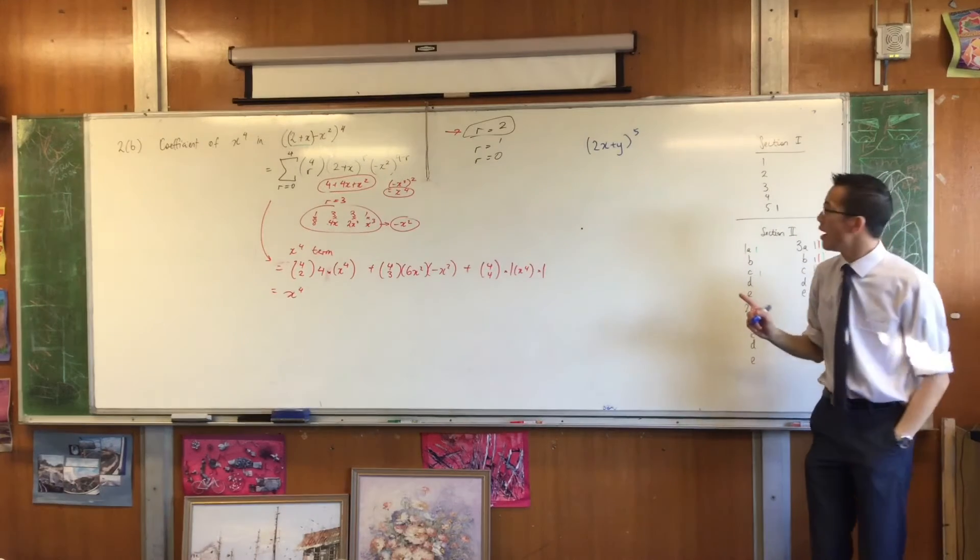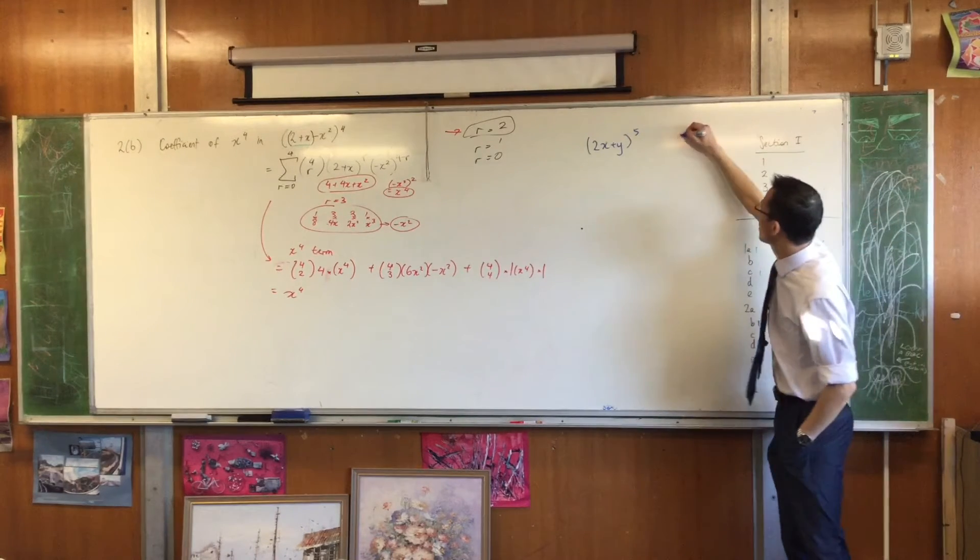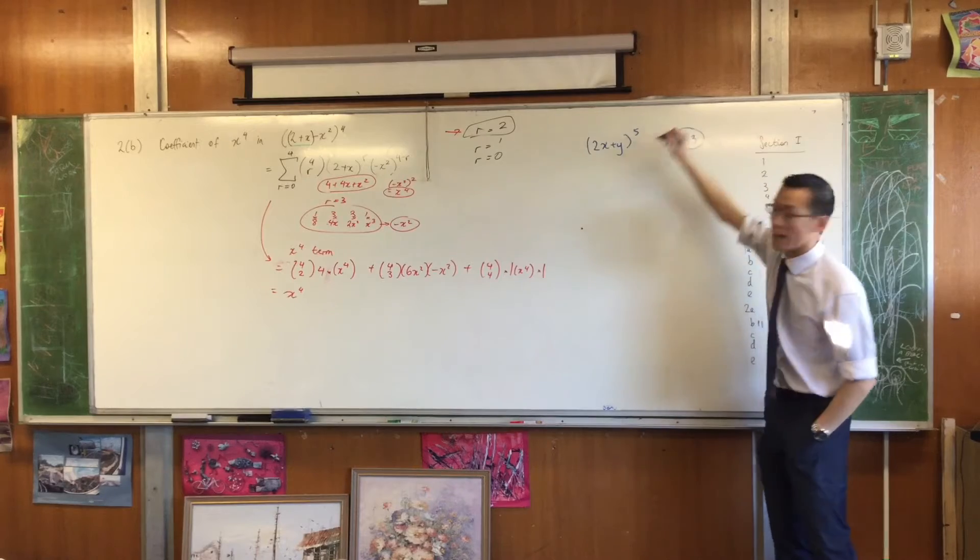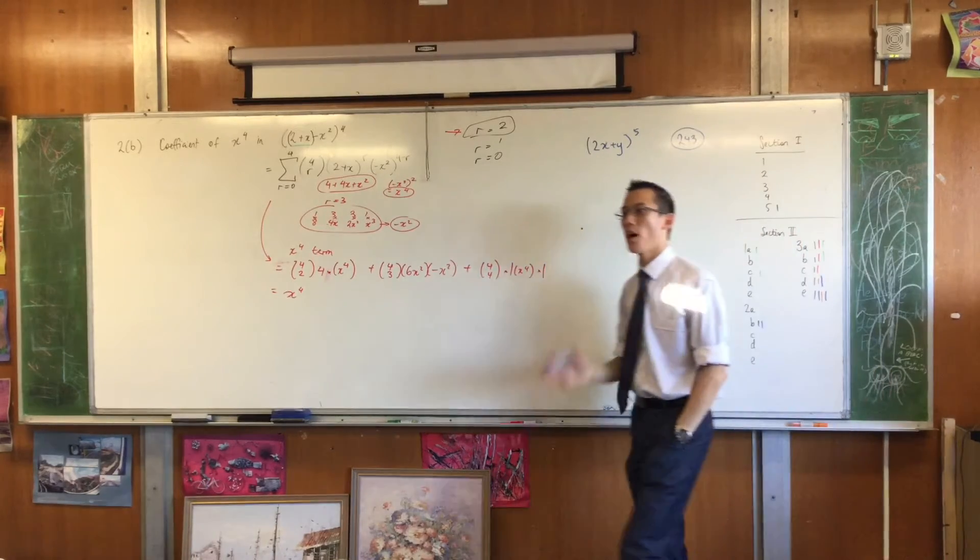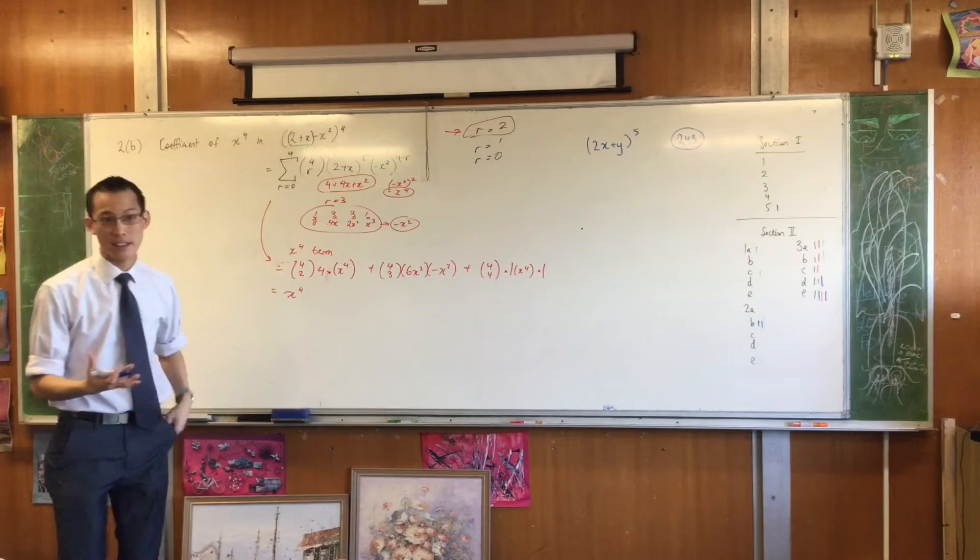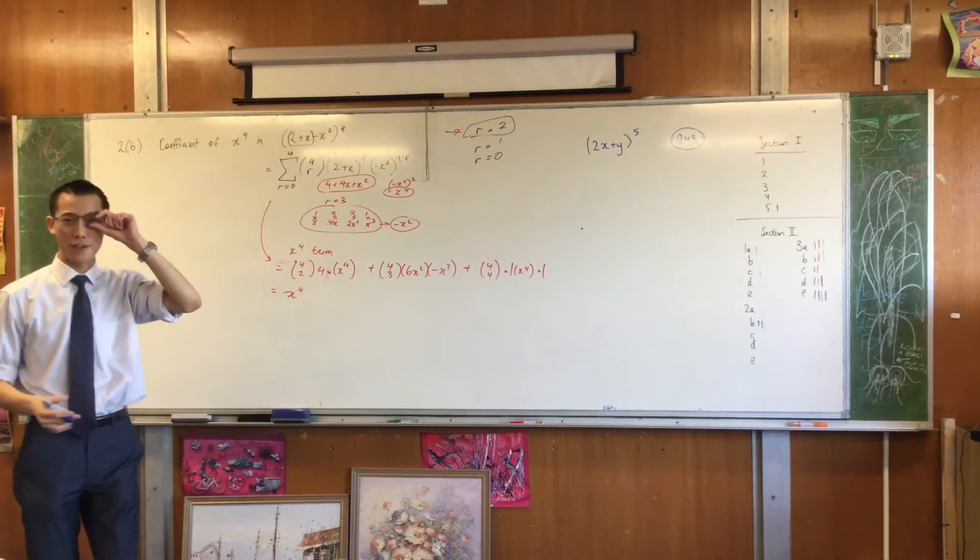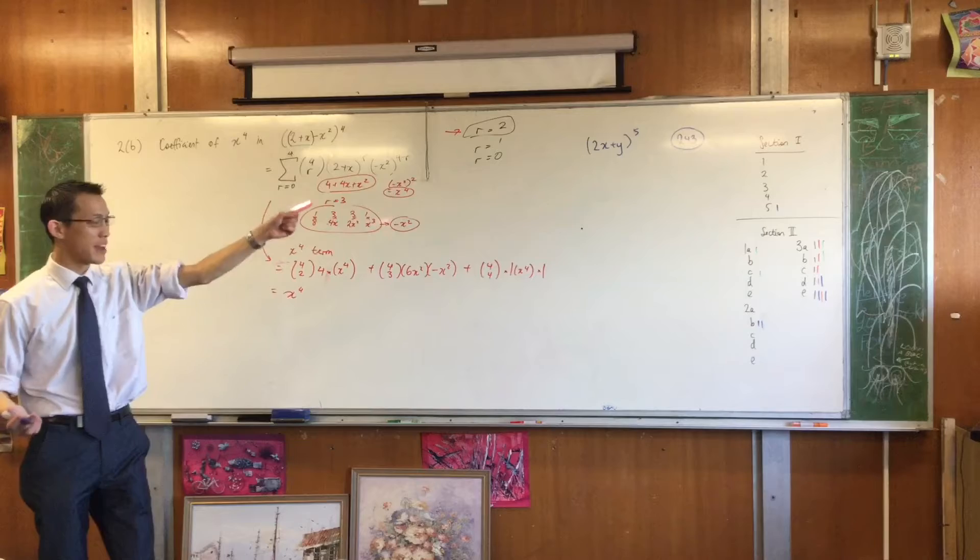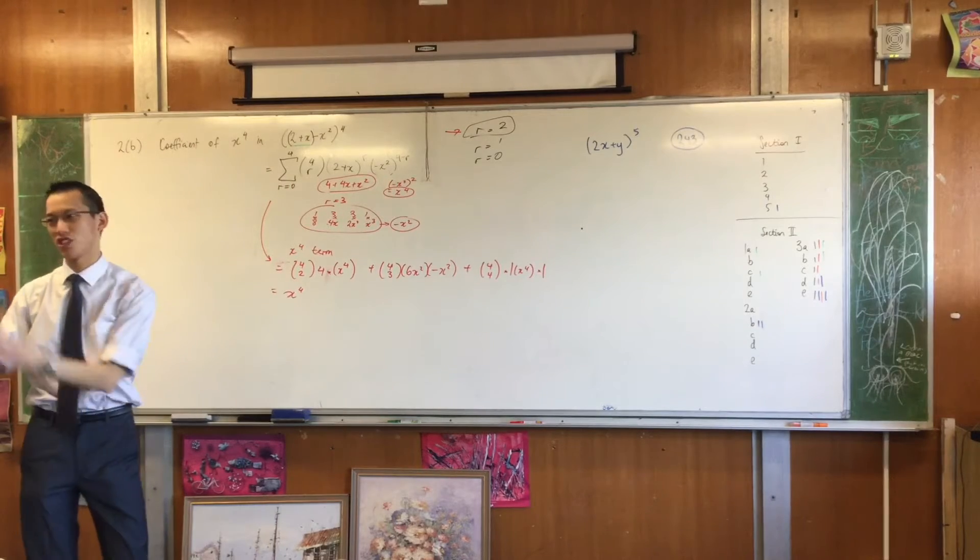You get given this and you're asked to show that all of the coefficients add up to that, which is fine. 95% of you guys attempted this the way you would expect it, which is (2x plus y) to the 5 is a binomial. It's an expansion, I'm good at expanding binomials, so you just expanded it.